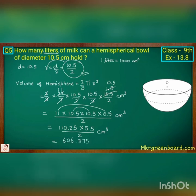Next we multiply 110.25 into 5.5 we get 606.375 divided by 2 and we cancel, after cancellation we obtain 303.1875 centimeter cube. This is our volume in centimeter cubes.